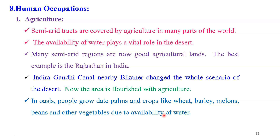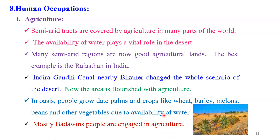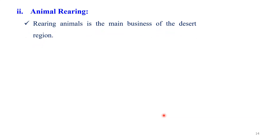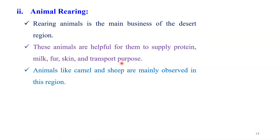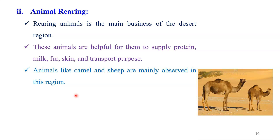But they do not carry out this agriculture throughout the year — only when the water is available during that particular period do they carry out agricultural activities. The other important occupation is animal rearing. Animal rearing is a very important occupation that we observe in the desert region. These animals are helpful to supply protein, milk, fur, skin, and for transportation purposes. Animals like camel and sheep are mainly observed in this region. The camel is a very important animal used by tribal people in that area.